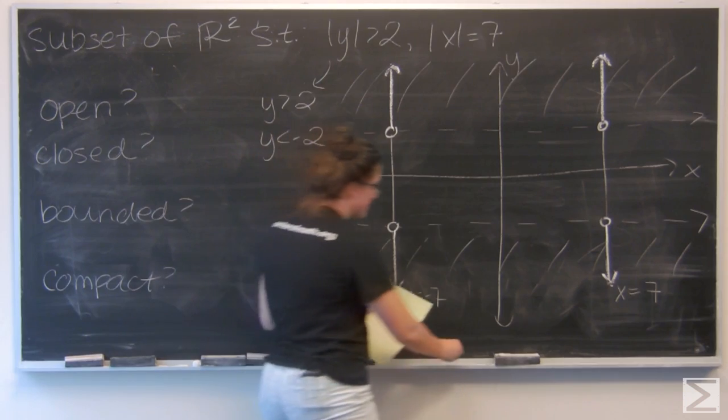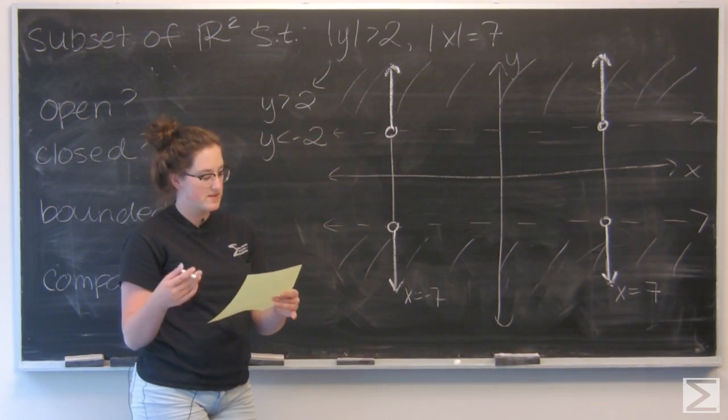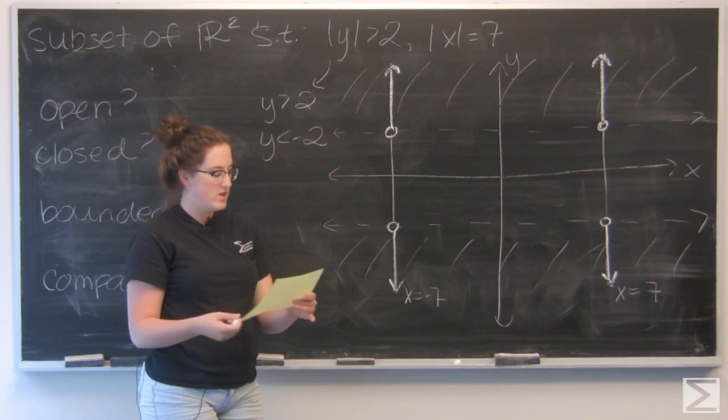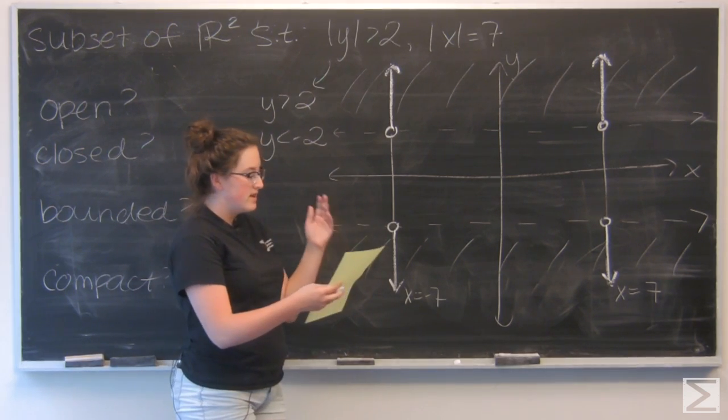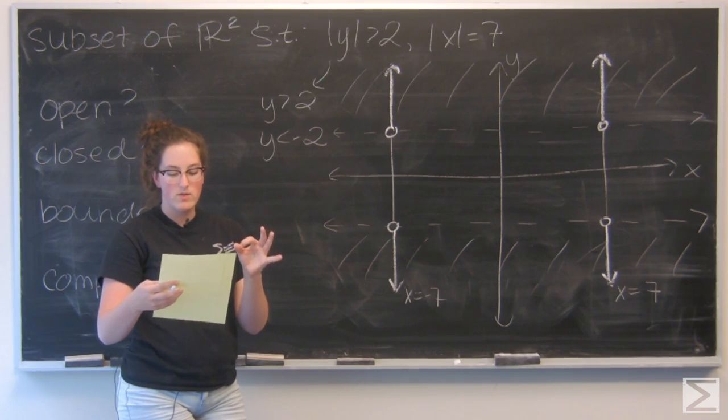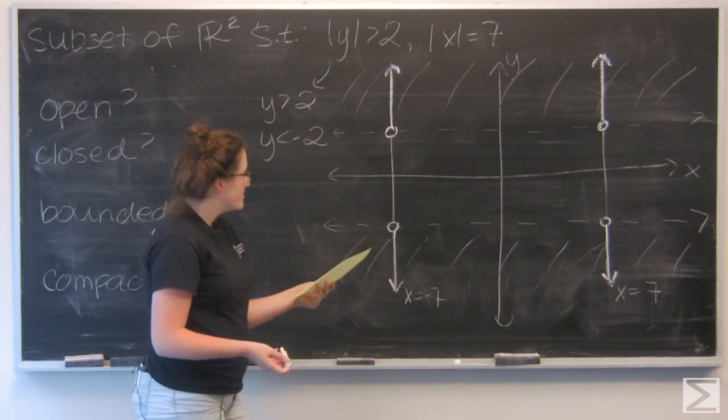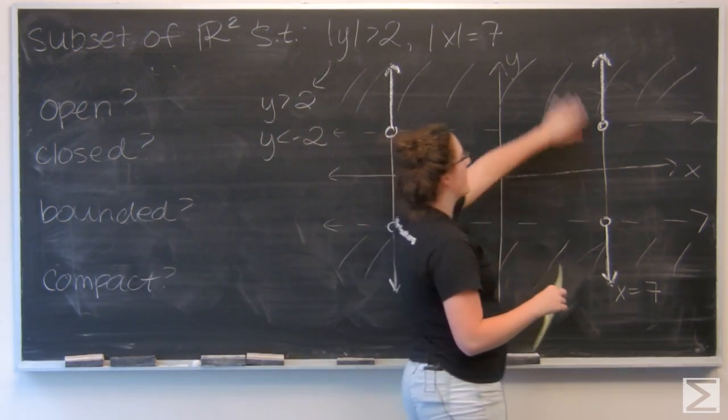Now let's take a look at each of the questions. Let's start with deciding about whether the set is open or not. So a set is open if for every point in the subset, a ball of radius r around the point is enclosed in the subset.